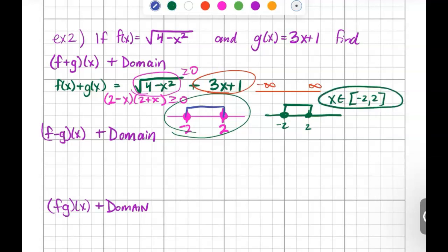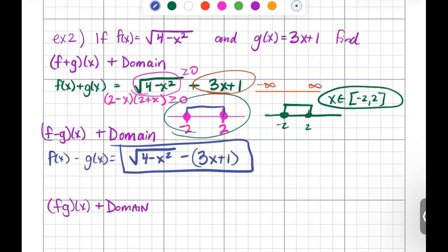Now, let's subtract them. f minus g of x is the same thing as f of x minus g of x, which means you're going to take the f function and subtract the g function. Put parentheses around it, because you can distribute your negative. I'm not going to. I'm just going to leave it like this with parentheses on it.